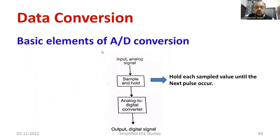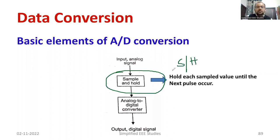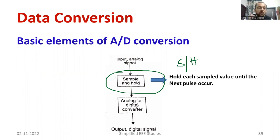When it comes to the basic elements of analog to digital conversion, we have to mention one important term called the sample and hold circuit. We have the analog input from the sensors, and the analog input will be directly connected to the ADC — the analog to digital converter — through the sample and hold circuit.